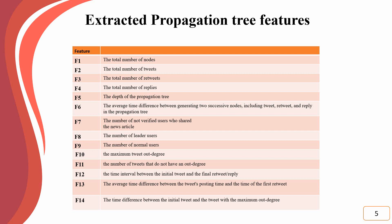To determine how quickly a news tweet gets retweeted, the average time difference between the tweet's posting time and the time of the first retweet is computed for all tweets in the propagation tree as feature F13. Also, we calculate the time difference between the initial tweet and the tweet with the maximum out-degree to determine how much time it takes for the most influential user in the propagation tree to publish the news, as feature F14.